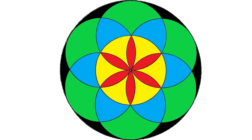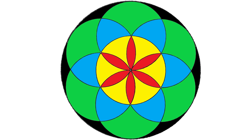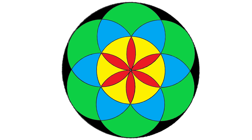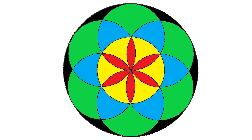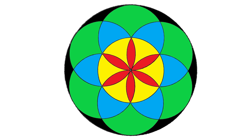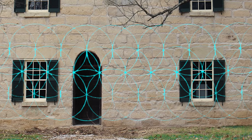Now that we have a daisy wheel, we can figure out how exactly this house was designed. Using the inherent geometry of the wheel, we can see that the pitch of the roof and the proportions of the walls fit neatly within the expanded grid created by the daisy wheel.